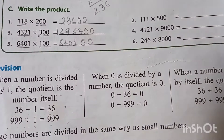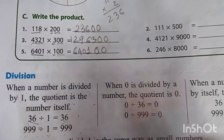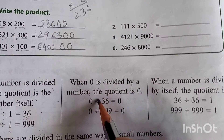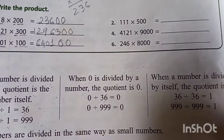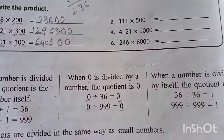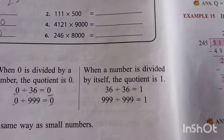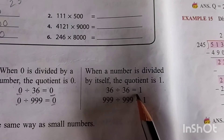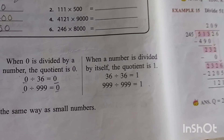Whenever we divide any number by one, the answer is the number itself. When zero is divided by a number, the quotient is zero — so zero divided by 36 or 99, the answer is zero. When a number is divided by itself, the quotient is one: 36 ÷ 36 = 1, and 999 ÷ 999 = 1.